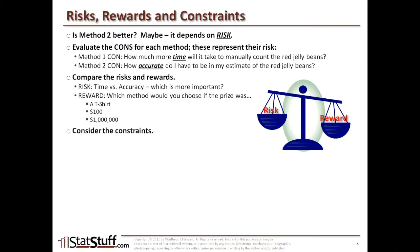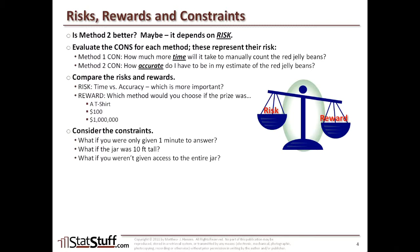We also need to consider the constraints involved. It may not be as straightforward as just having access to the jar to spill out jelly beans and count one by one for a million dollar prize. For example, what if we were only given one minute to answer the question? We might have no choice but to use the second method because we need something that takes a lot less time. Or what if the jar was actually ten feet tall? For $100, it may not be worth pouring out the jelly beans, but for a million dollars, a lot of people would still be willing to do it. Another constraint: what if we weren't given access to the entire jar? Then we might have no choice but to use some optimal version of method two — taking a visual sample and making estimates. We have to understand these constraints.